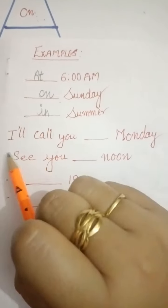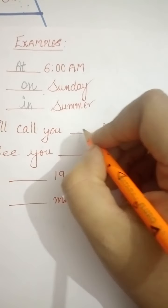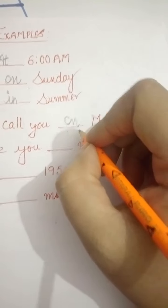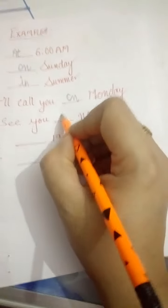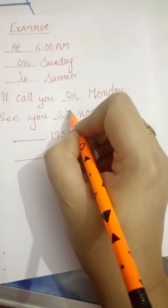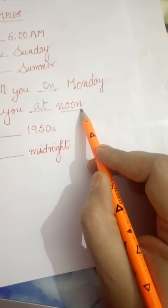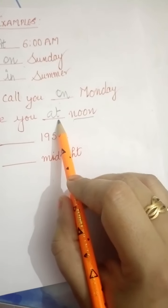Now, I will call you dash Monday. I will call you on Monday. Because Monday is a day and for day we use the preposition on. Next one is, see you dash noon. See you at noon. As you can see here, noon is a specific time, so we use the preposition at.